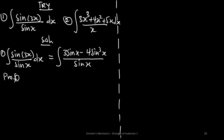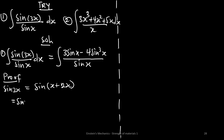Let's look at how we arrive at that. sin(3x) can be expanded as sin(x + 2x), since x + 2x = 3x. Using the sine addition formula, this equals sin(x)cos(2x) plus cos(x)sin(2x).